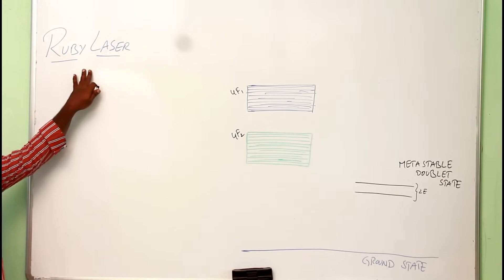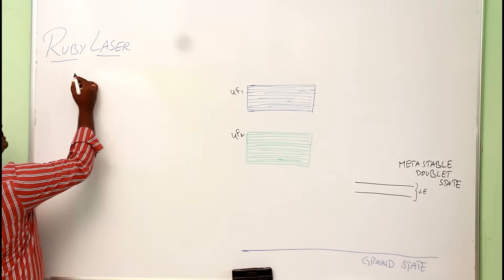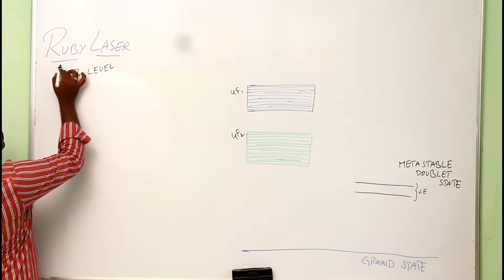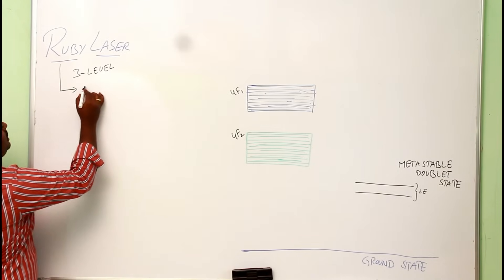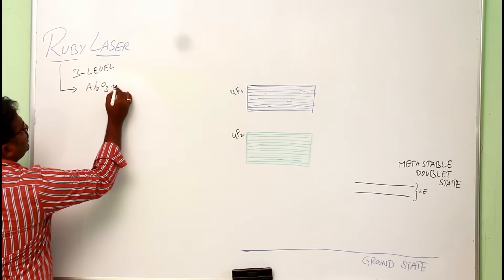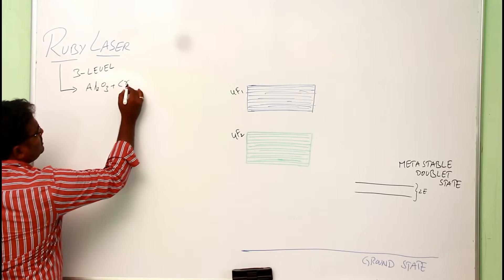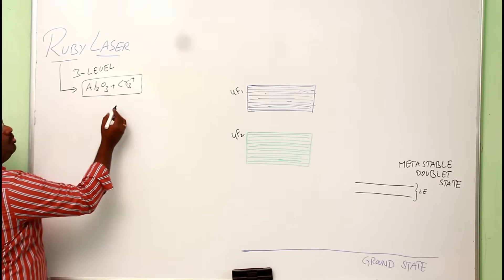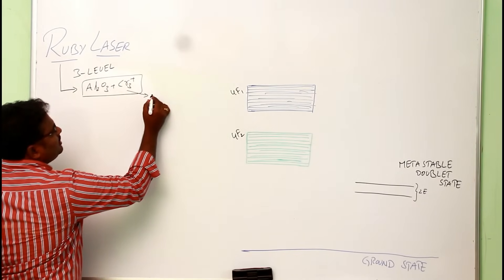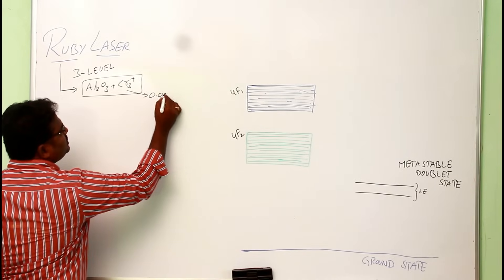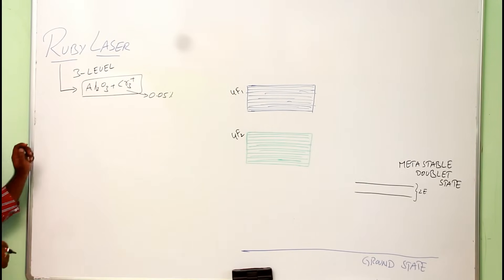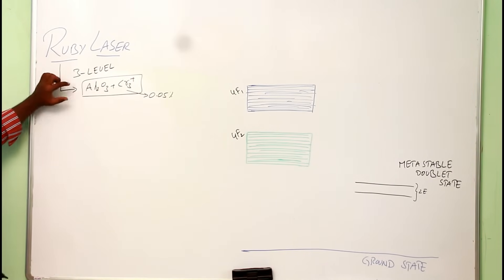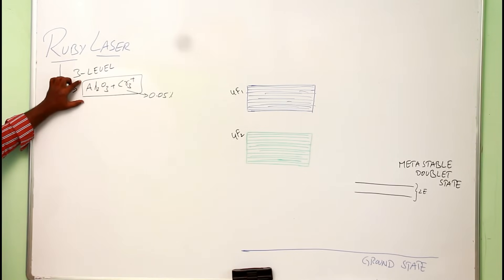A ruby laser is a solid-state laser and it's a three-level laser system. Ruby is a combination of Al2O3 doped with Cr3+ ions, called a ruby rod or ruby crystal. The Cr3+ doping is by a weight of 0.05%. By using this ruby rod, we are going to produce a laser.